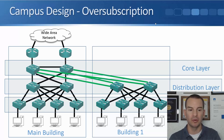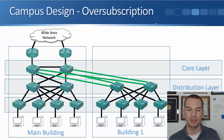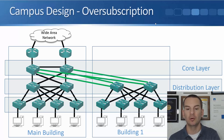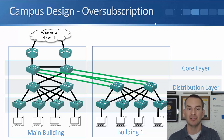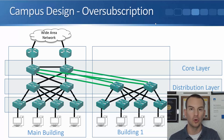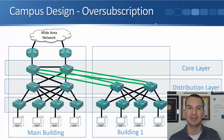Going back a slide, we've got two buildings with four access layer switches in each building — say 48-port switches with 40 end hosts plugged into each. That's 160 hosts in each building, uplinking to a pair of distribution switches. But I don't have 160 uplinks going from the access layer to the distribution layer, or that many from distribution up to core, because my PCs are not all transmitting at the same time.